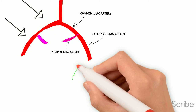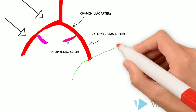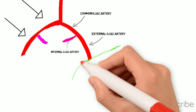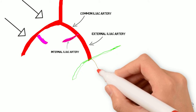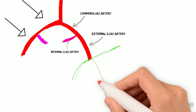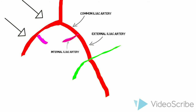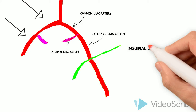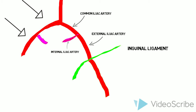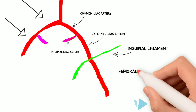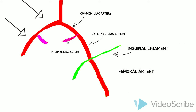From here, when the vessel passes under the inguinal ligament, which is right here in green, it becomes the femoral artery.